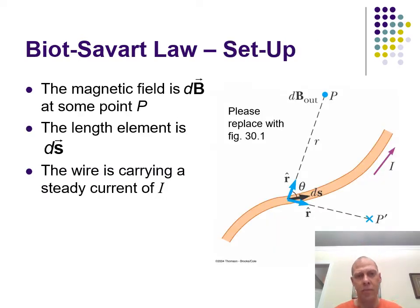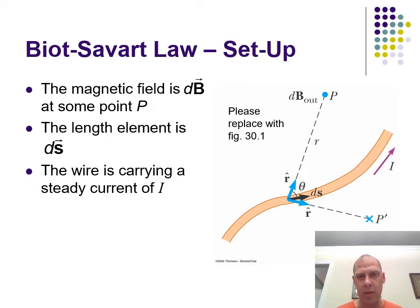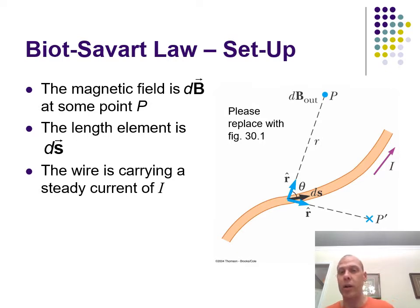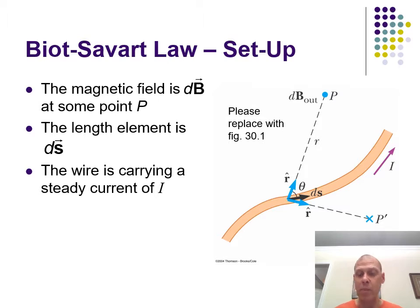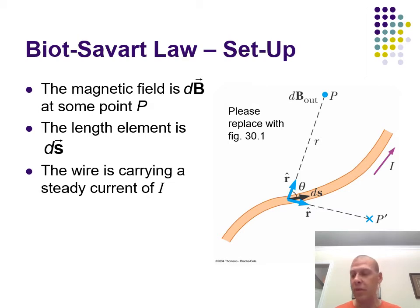This is the Biot-Savart law, which is a French name. Basically, if we want to know the magnetic field out at some point P, charges moving through a wire at any given point all contribute some magnetic field depending on their orientation. The electric field goes out radially from a charge, which means the magnetic field has to be perpendicular — we're talking about a cross product. So the magnetic field has to be perpendicular both to that radial electric field and to the movement.